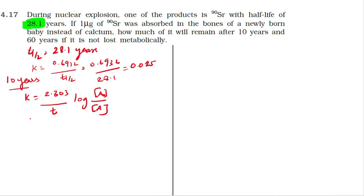So k value 0.025 equals 2.303 divided by t, where t is 10 years. The concentration is in micrograms, so initial concentration is 1 microgram divided by the final amount.